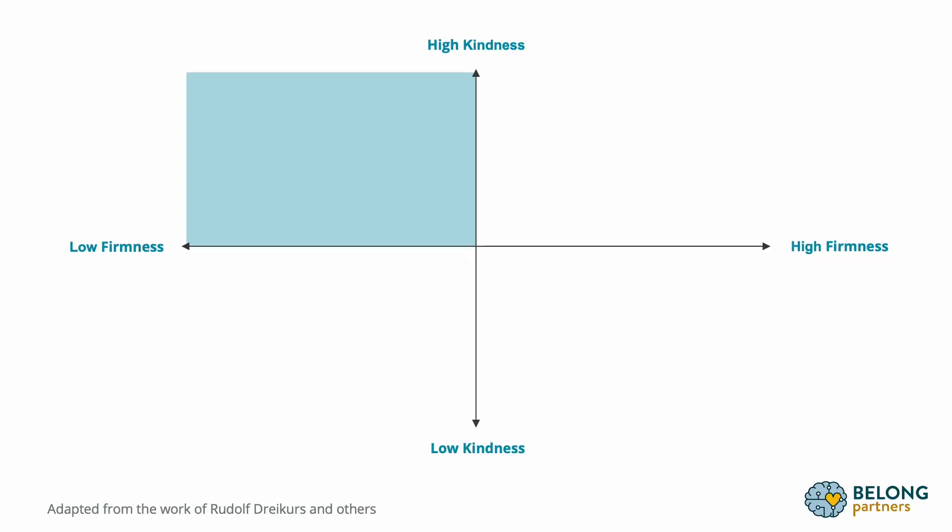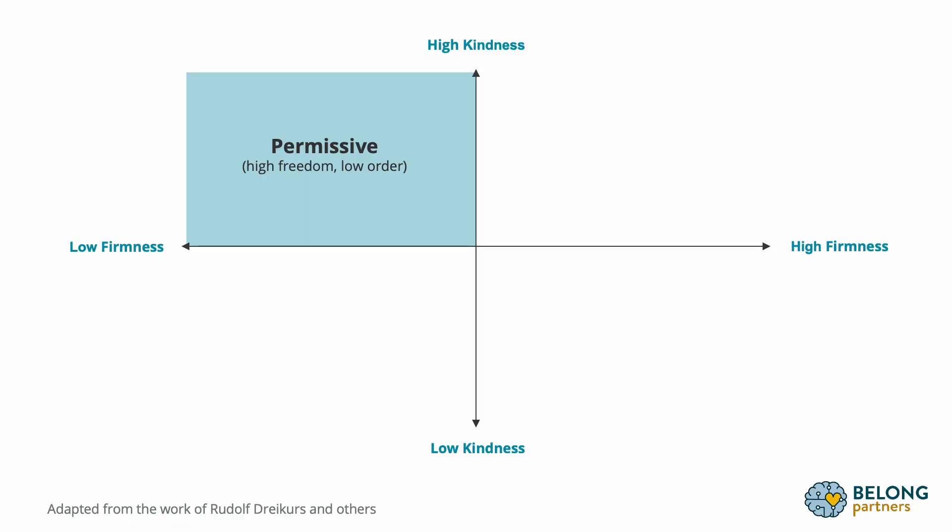Starting in that top left-hand corner — a classroom or household where there's a lot of kindness but not much firmness. Think about how you'd describe that. Many people think it could be chaotic, loud, but also really creative and fun. The name we give to this teaching or parenting style is permissive, meaning there is a lot of freedom and at the same time very low order.